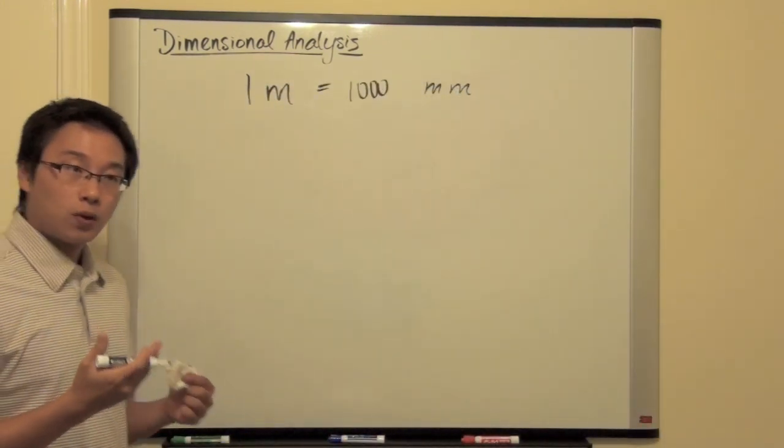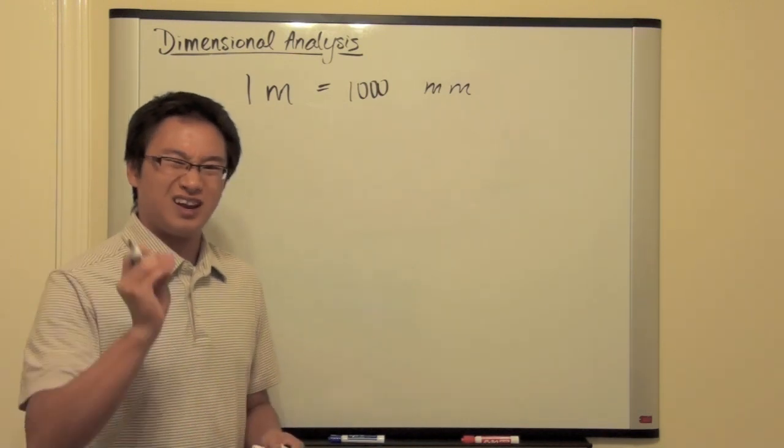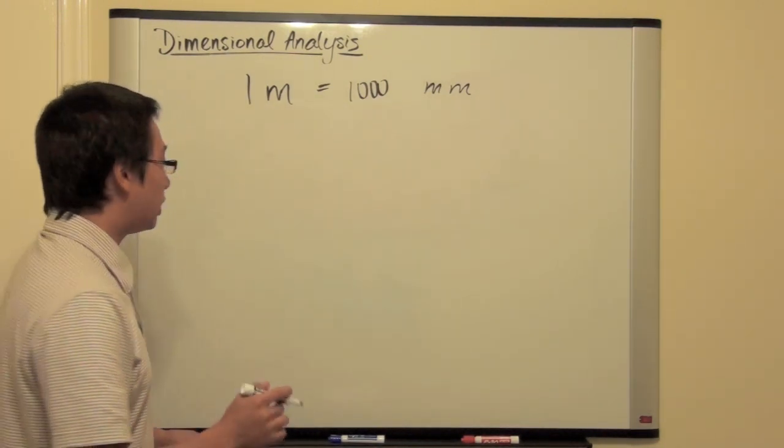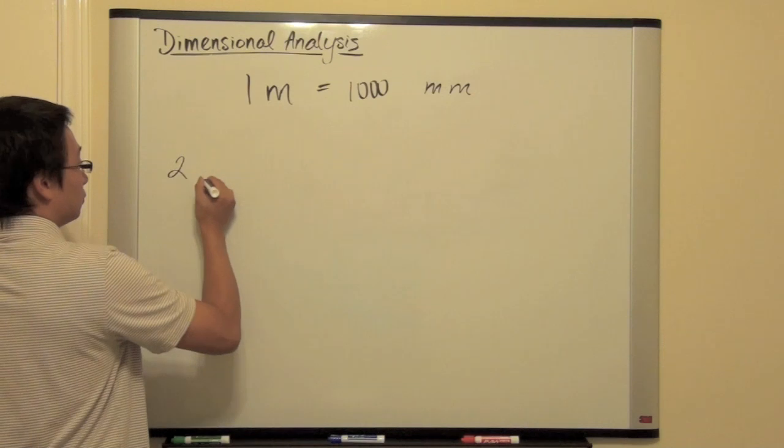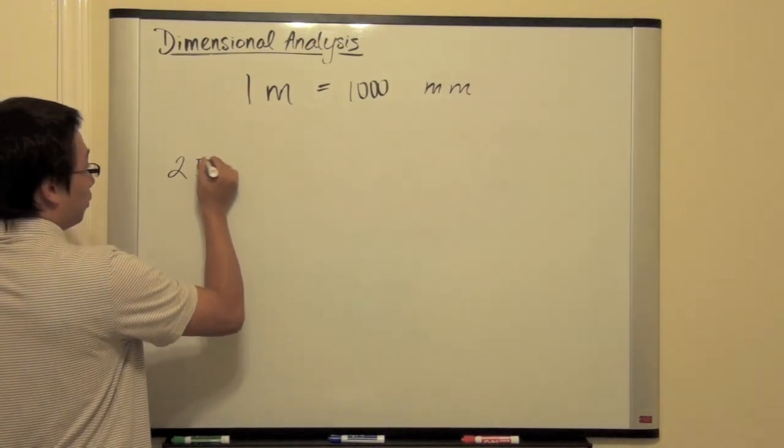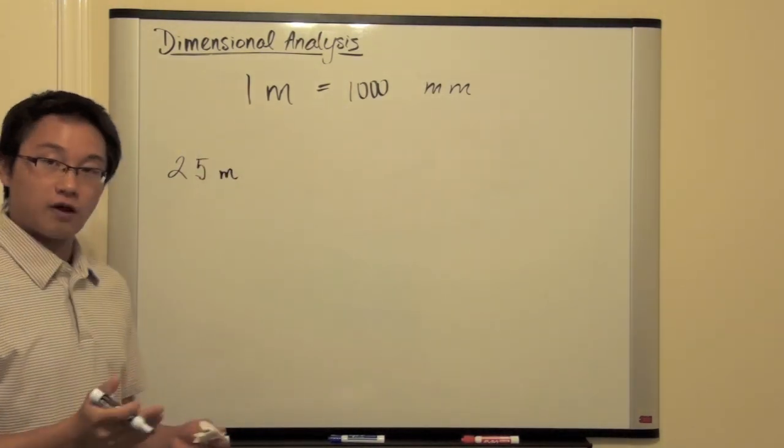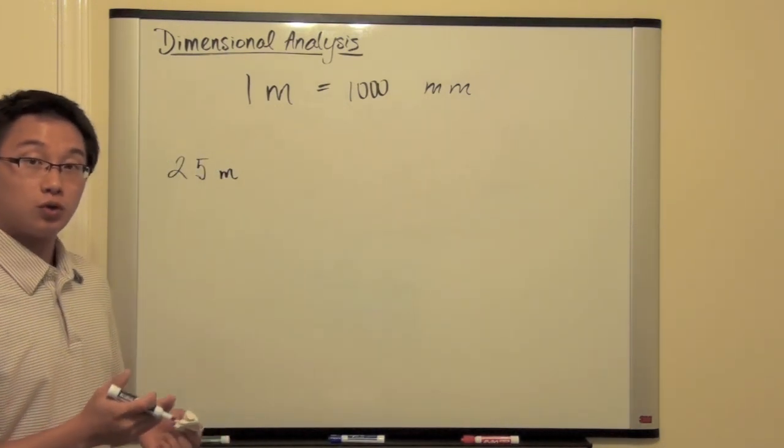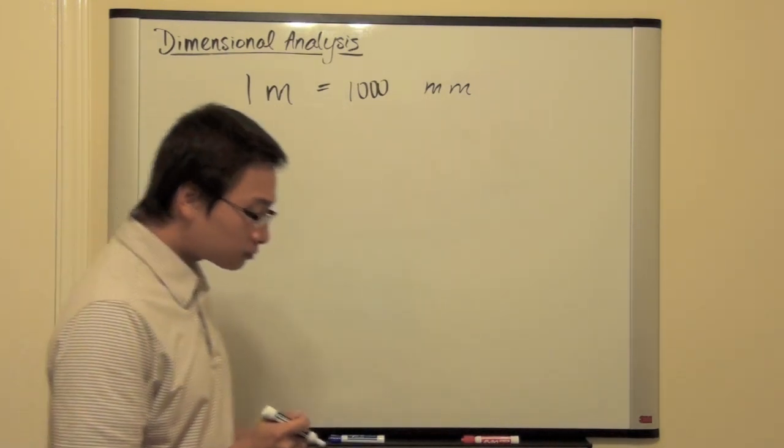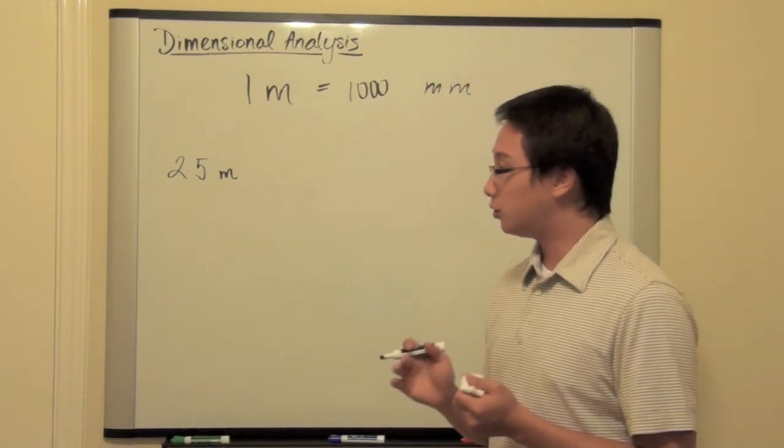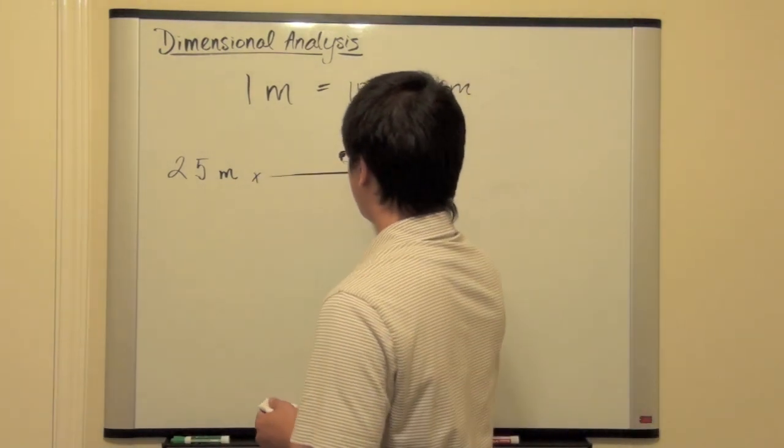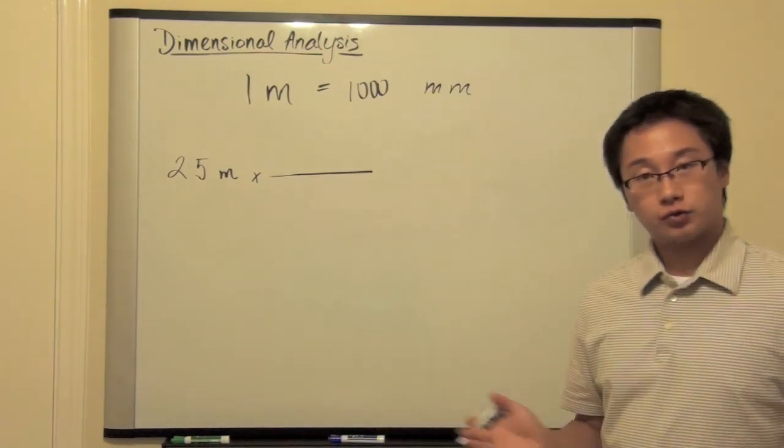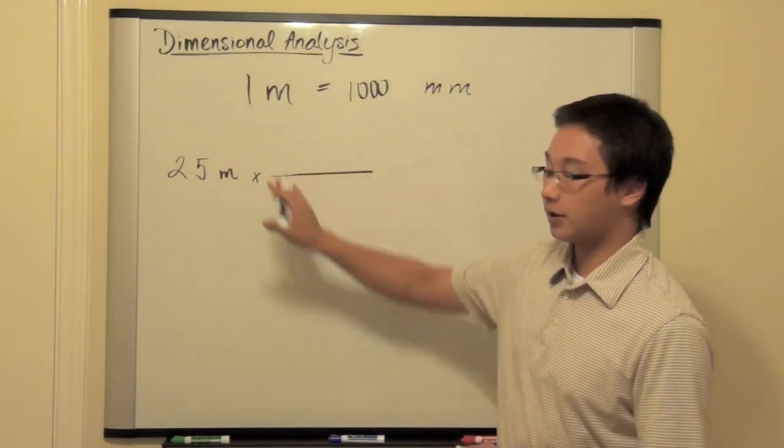Now, to make the question a little bit more different and a little bit more challenging, I'm going to change this question to 25 meters. And I would like to change this 25 meters to millimeters. And so, what we need to do is to come up with a conversion factor. So, we multiply by a conversion factor. This is called a conversion factor.